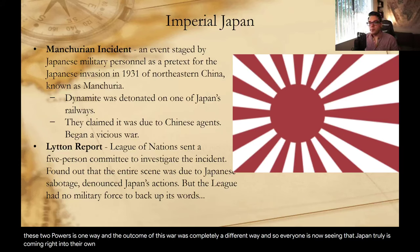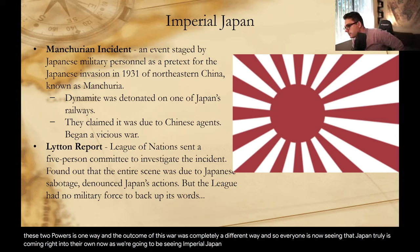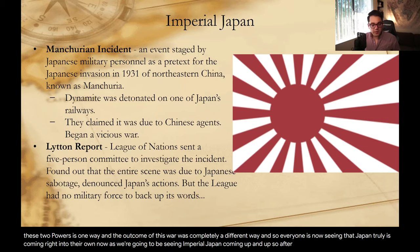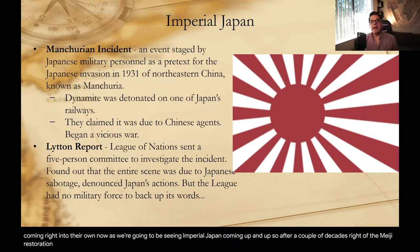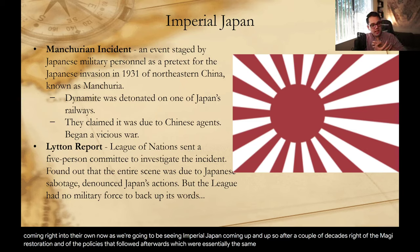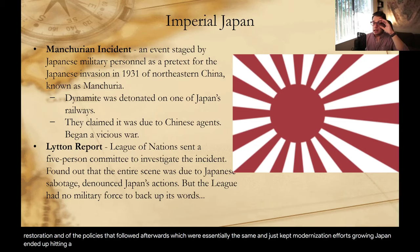As we're going to be seeing Imperial Japan coming up and up — after a couple of decades of the Meiji restoration and the policies that followed, which kept modernization efforts growing, Japan ended up hitting a glass ceiling because the island nation of Japan is not that large.